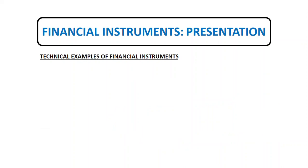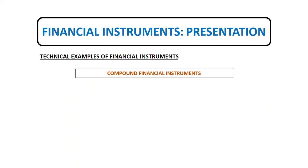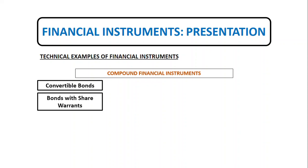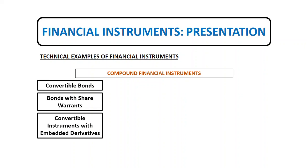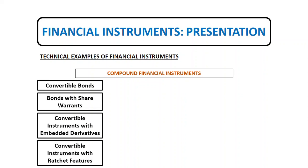We also have compound financial instruments. While many financial instruments are either a liability or equity in their entirety, that is not true for all financial instruments issued by the entity. Some, referred to as compound financial instruments in IAS 32, contain both elements. A compound financial instrument is a non-derivative financial instrument that, from the issuer's perspective, contains both a liability and equity component, based on IAS 32, paragraph 28. Examples of compound financial instruments are convertible bonds, bonds with share warrants, convertible instruments with embedded derivatives, convertible instruments with ratchet features, and mandatorily redeemable preference shares.